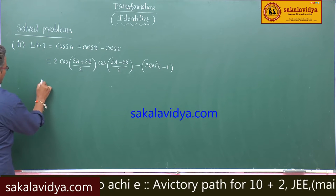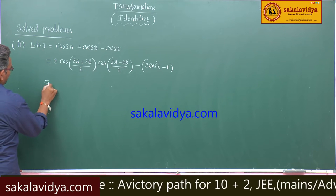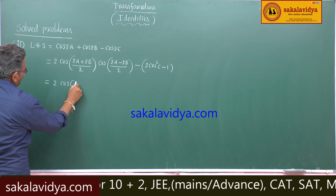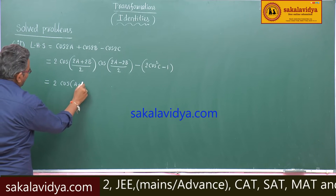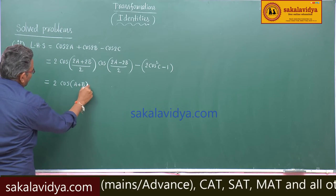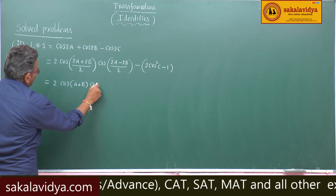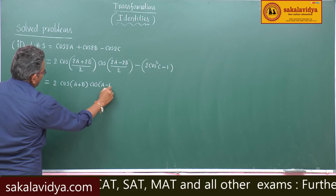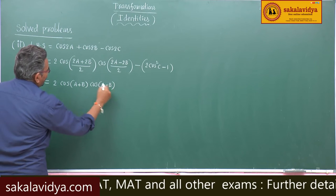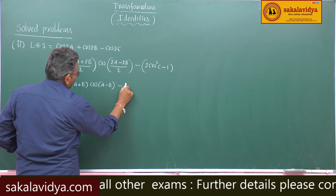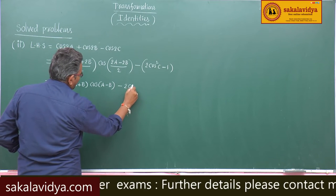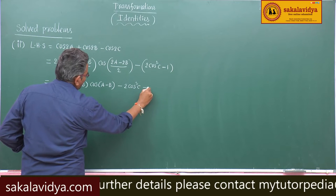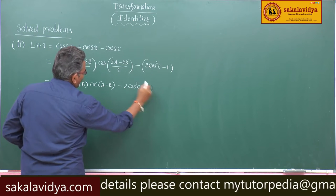This simplifies directly to cos(A+B)·cos(A−B) minus 2cos²C, and minus into minus gives plus 1.